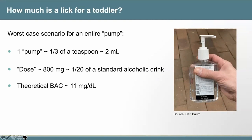How much is a lick? Hard to quantify that. We could consider a worst-case scenario for an entire pump of a typical hand sanitizer bottle. One pump is roughly a third of a teaspoon or about two mLs. The dose of ethanol in a typical hand sanitizer would be about 800 milligrams of ethanol, about one-twentieth of a standard alcoholic drink. If you distribute that dose into a typical toddler who might be 10 or 12 kilos, you would get a theoretical peak blood alcohol concentration of 11 milligrams per deciliter — enough to cause some mild symptoms, but certainly not severe intoxication.